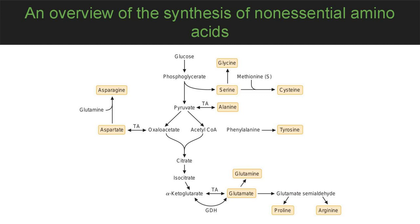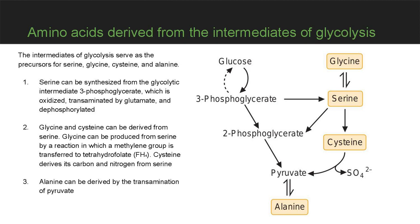Four amino acids are synthesized from intermediates of glycolysis: serine, glycine, cysteine, and alanine. Serine, which produces glycine and cysteine, is synthesized from 3-phosphoglycerate, and alanine is formed by transamination of pyruvate, the product of glycolysis. When these amino acids are degraded, the carbon atoms are converted to pyruvate or to intermediates of the glycolytic/gluconeogenic pathway, and therefore can produce glucose or be oxidized to CO₂.